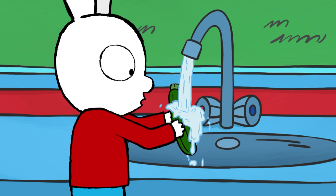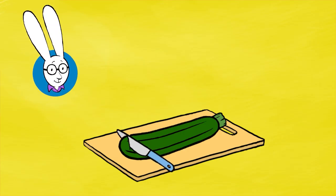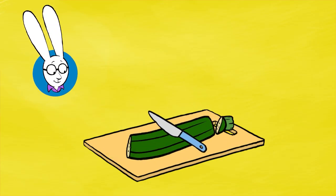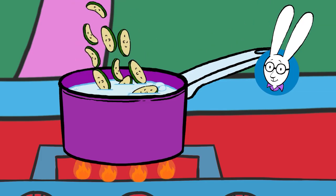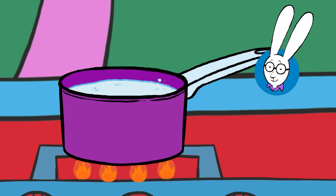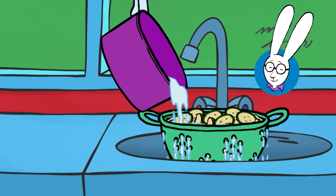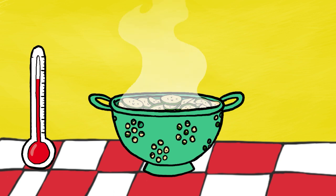Wash the courgette in cold water. Ask an adult to remove both ends and cut into very thin slices. Cook them in boiling water for two minutes and then drain them. Let them cool down really well so you can pick them up in your hands later.